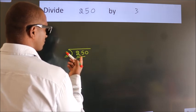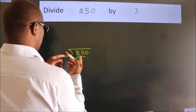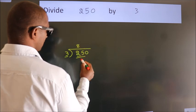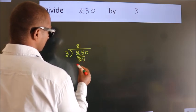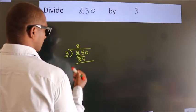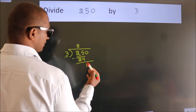A number close to 25 in the 3 table is 3×8=24. Now we subtract, we get 1.